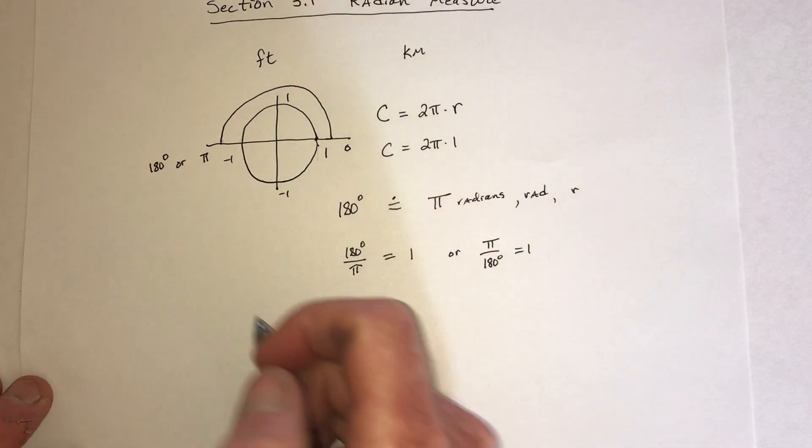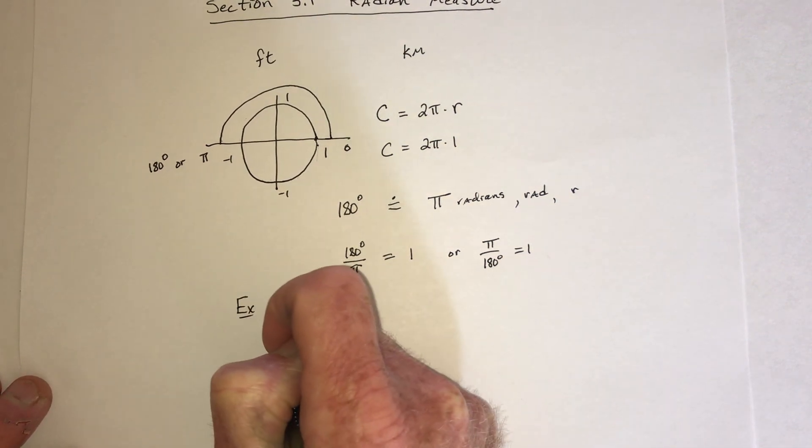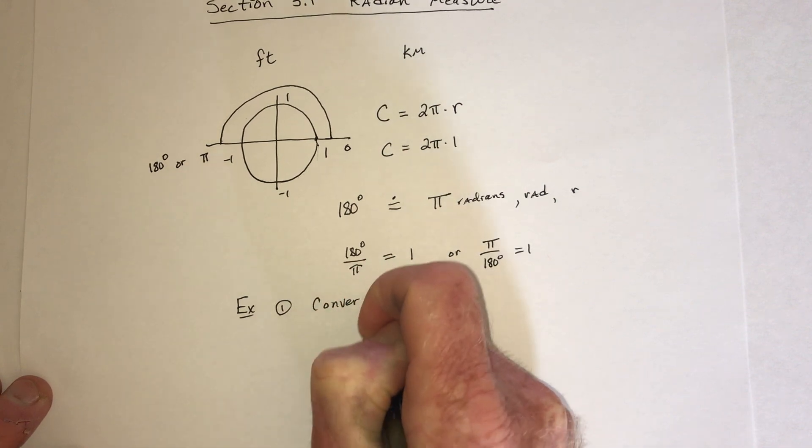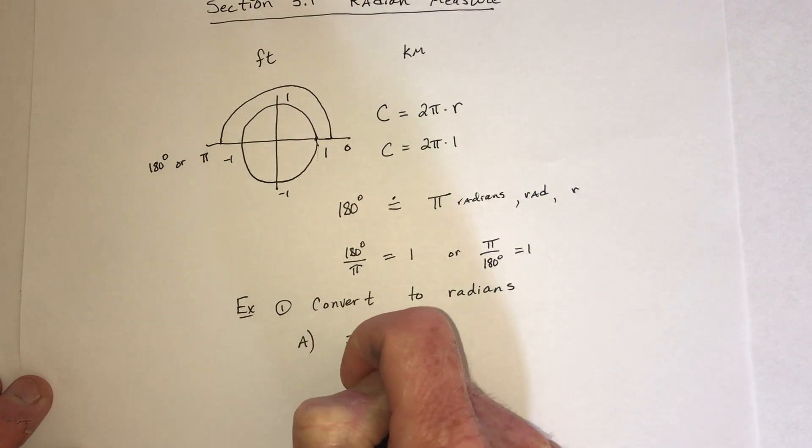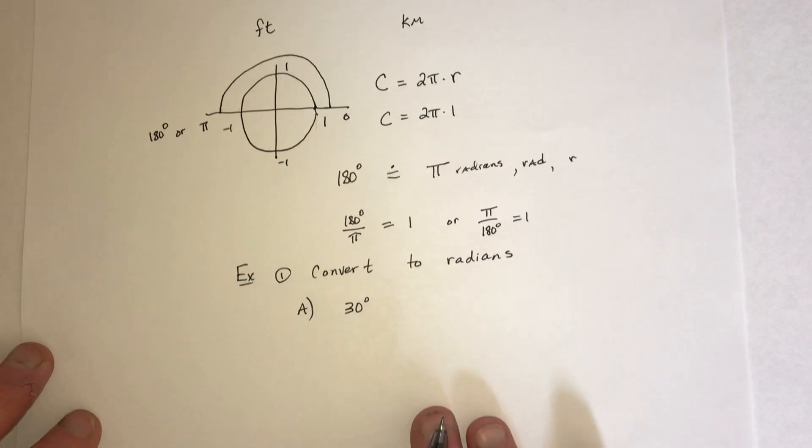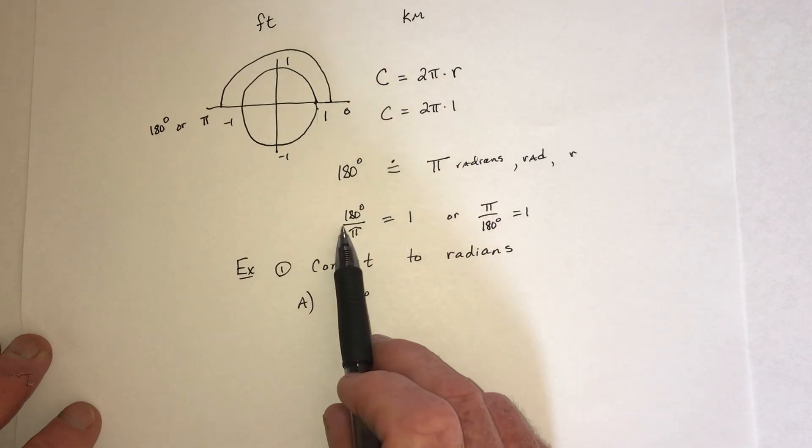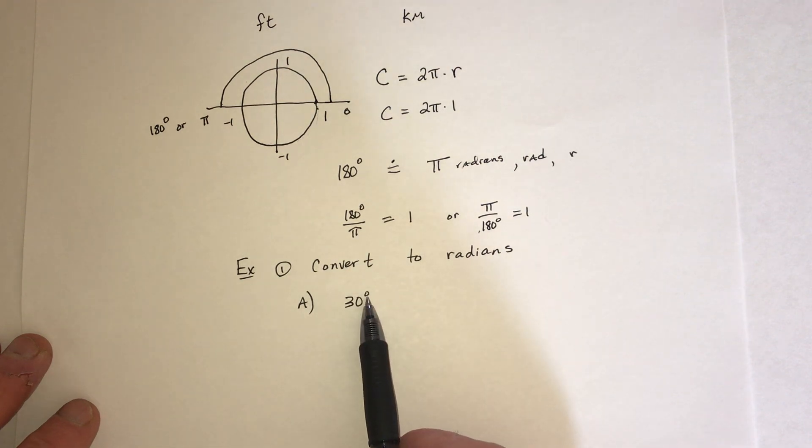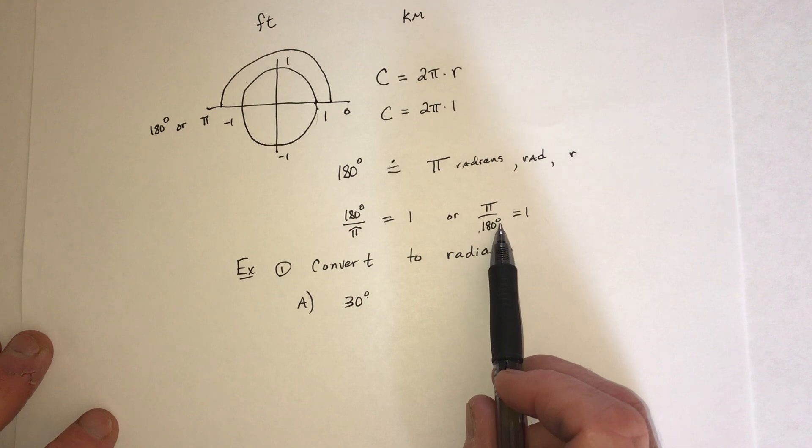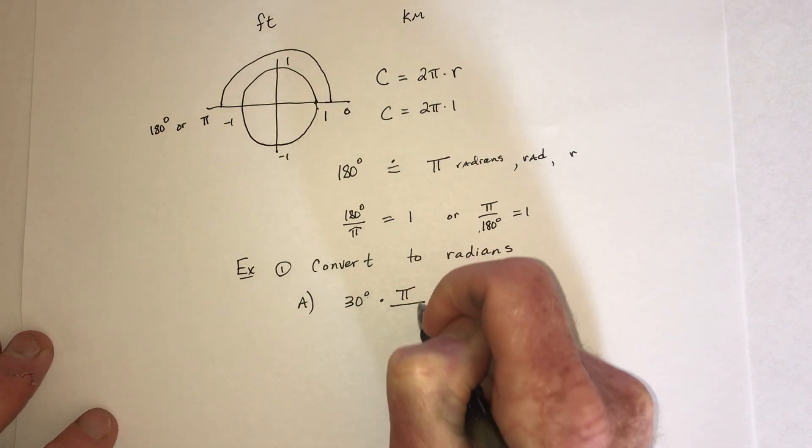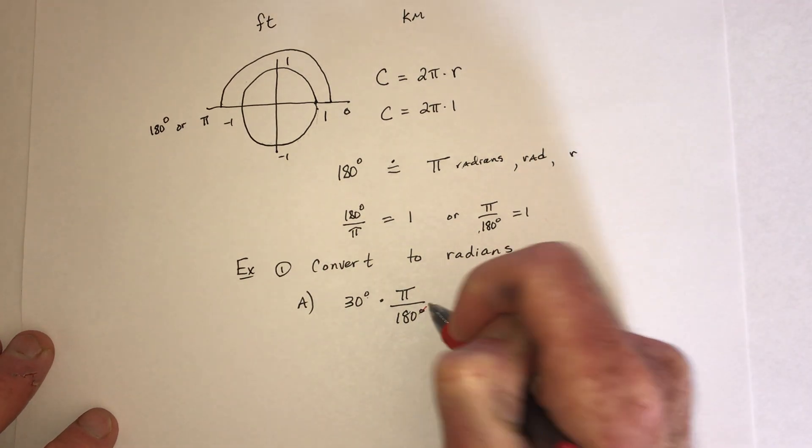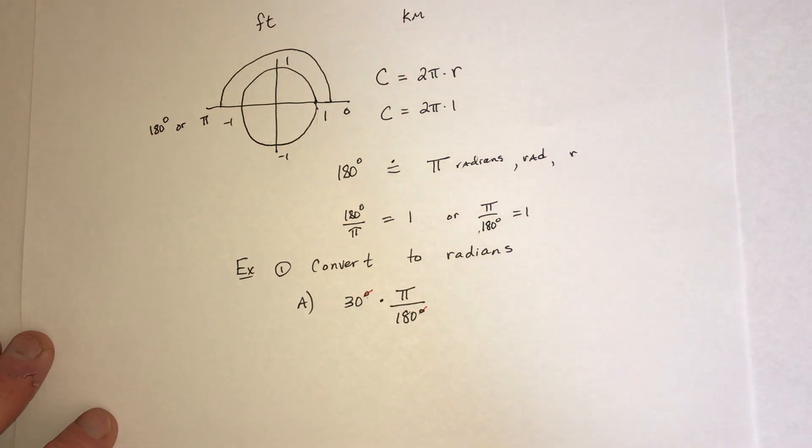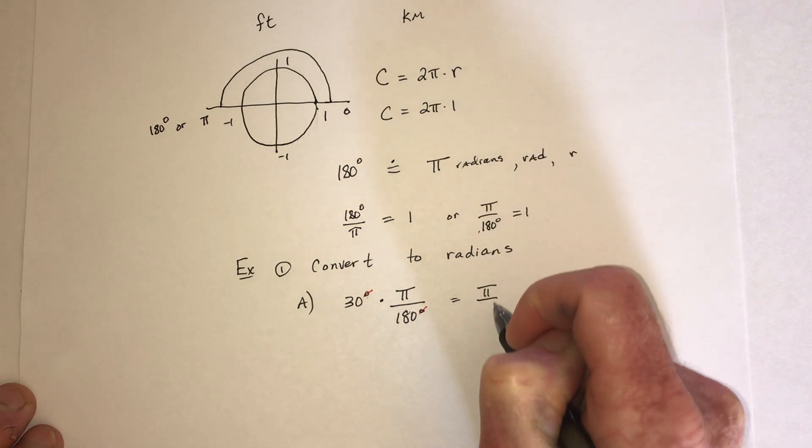So for example number one, convert to radians. Part A, how about 30 degrees? So we're going to be multiplying by one of these two fractions. And I want degrees to cancel. So I'm going to use this where it has degrees in the bottom. Or the denominator. So then, with a red pen, I can have degrees cancel. So it's now in radians. And to reduce, a 30 will divide into a 180 six times. So this will be pi over 6.